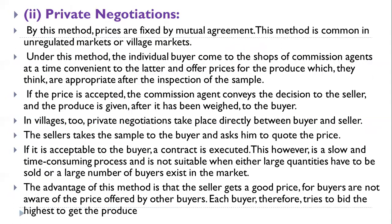The second method is private negotiations, by which prices are fixed by mutual agreement. This method is common in unregulated or village markets. An individual buyer comes to the shop of the commission agent and offers a price for the produce after inspecting a sample. If the price is accepted, the commission agent conveys the decision to the seller and the produce is weighed and given to the buyer. In villages, private negotiation takes place directly between buyers and sellers; the seller takes a sample to the buyer and asks for a quoted price, and if acceptable, a contract is executed.